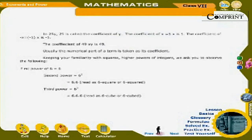In 25y, 25 is called the coefficient of y. The coefficient of x (= 1·x) is 1. The coefficient of −x (= −1·x) is −1. The coefficient of 49xy is 49. Usually, the numerical part of the term is taken as its coefficient.